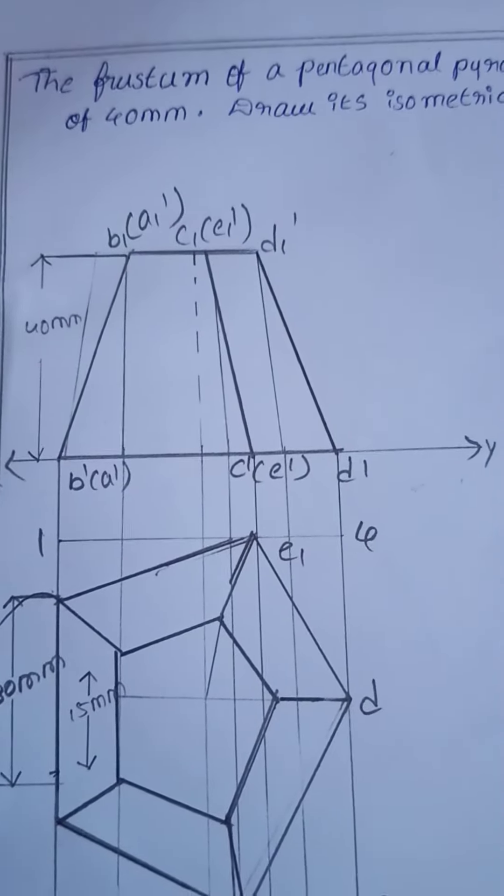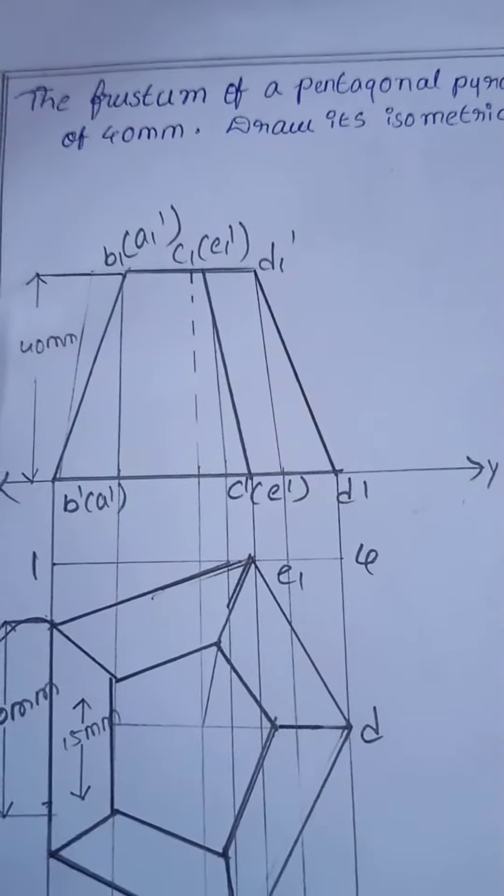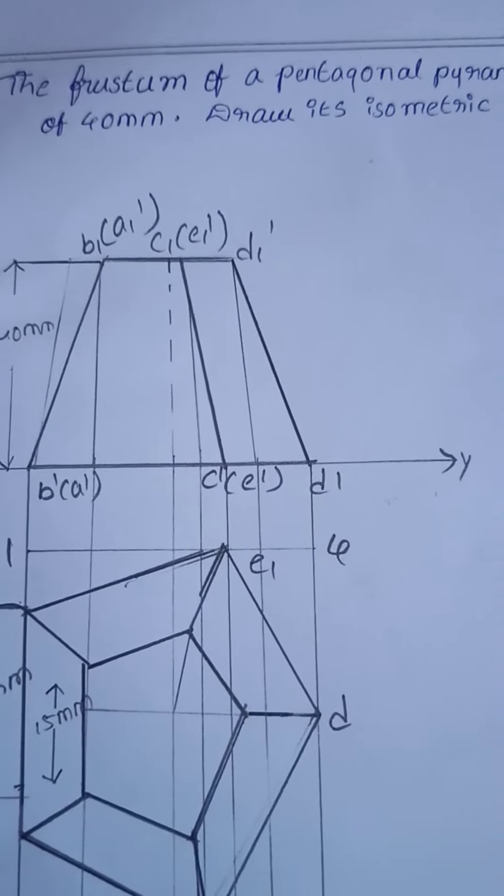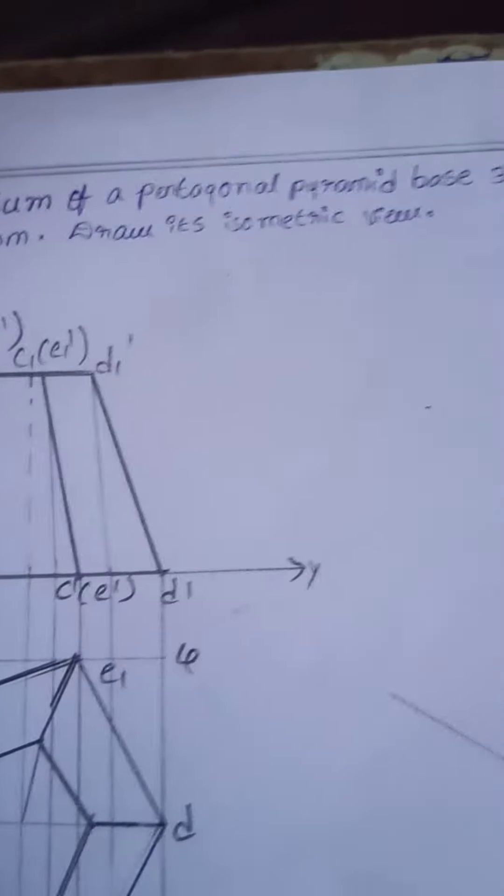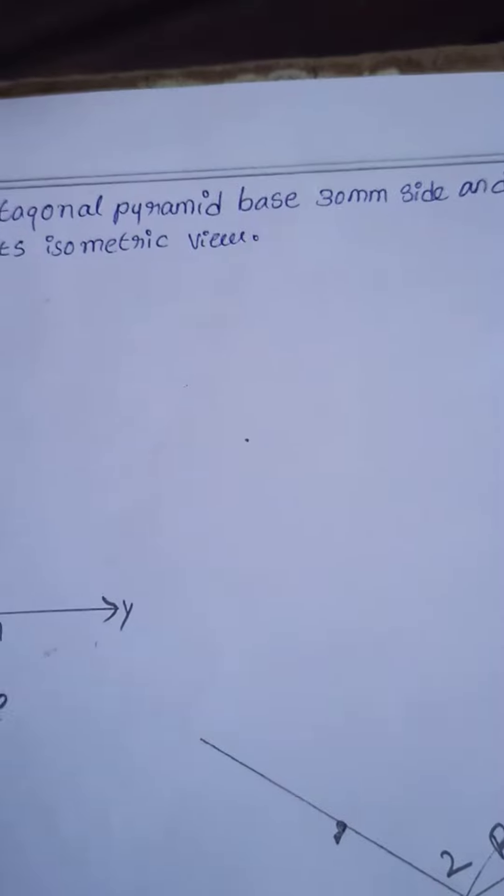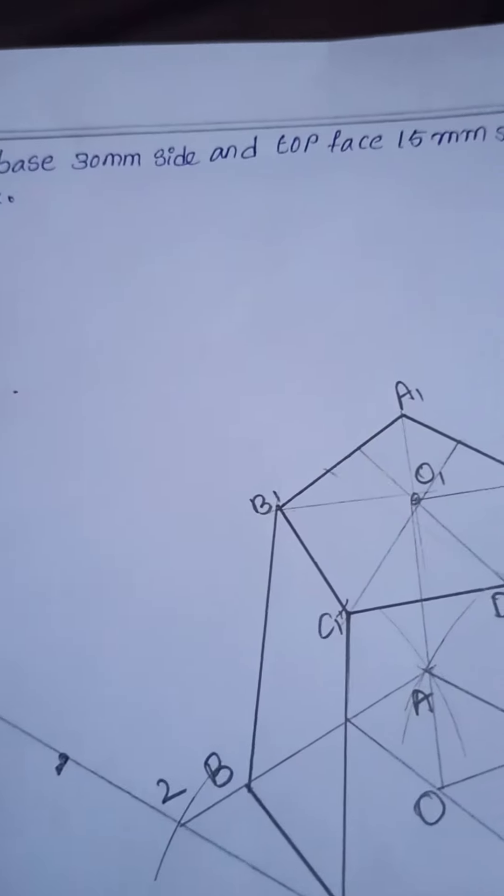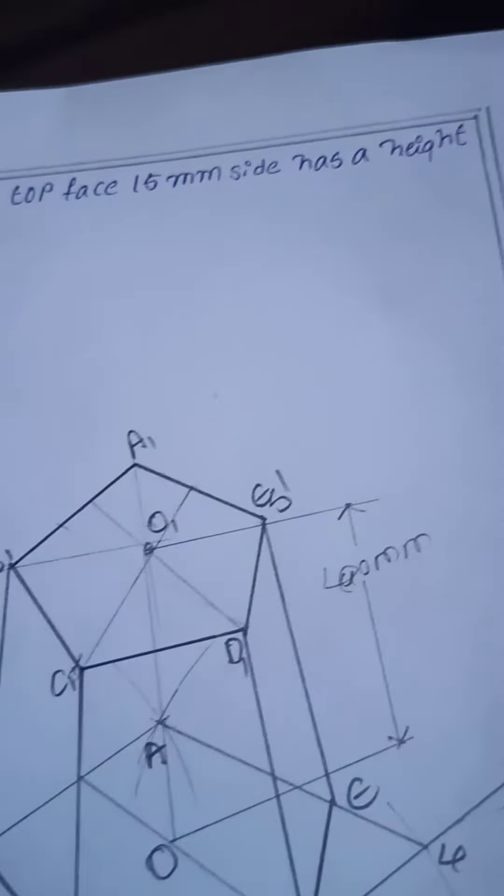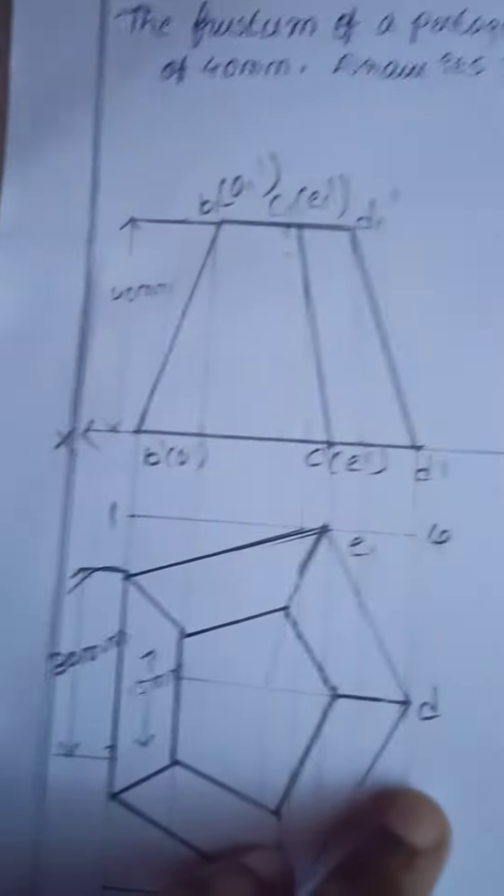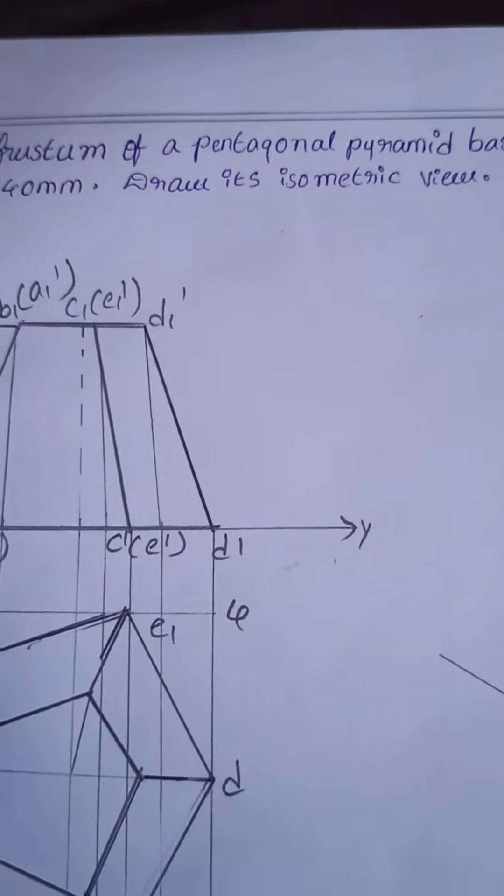In engineering graphics from isometric projection, I have solved an example. The frustum of a pentagonal pyramid base 30 mm side and top face 50 mm side has a height of 40 mm. Draw its isometric view.